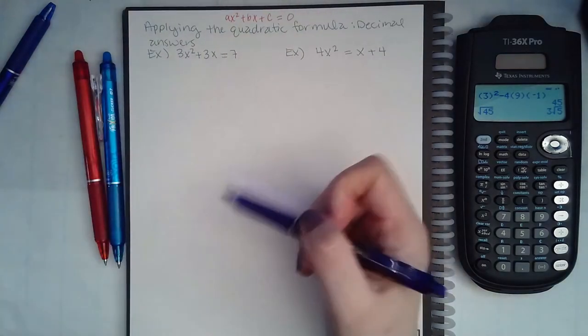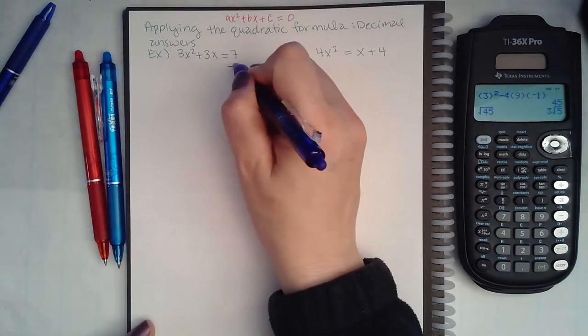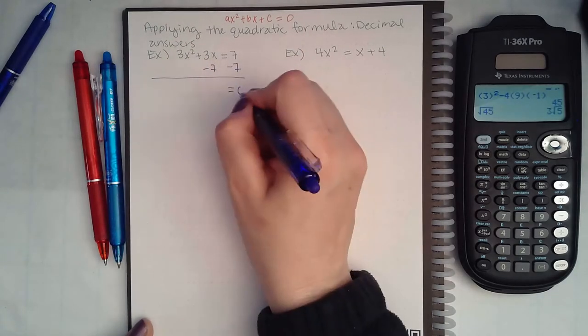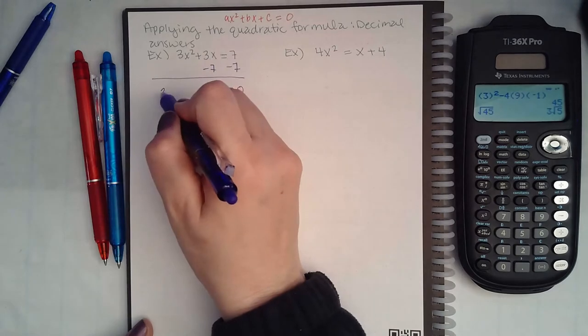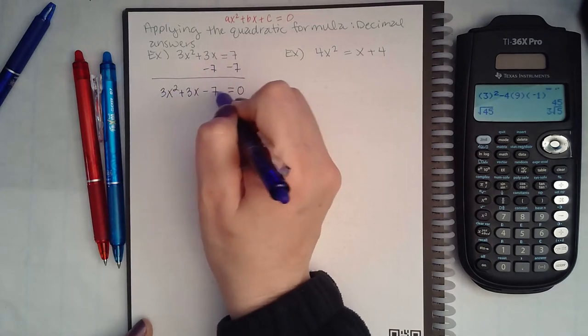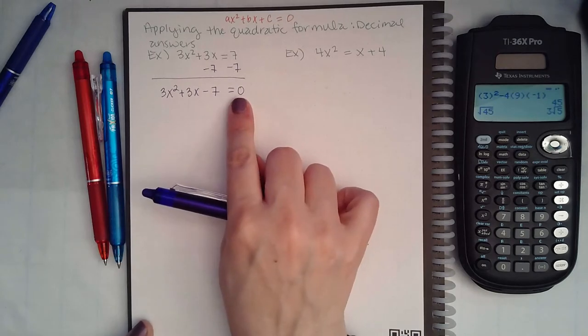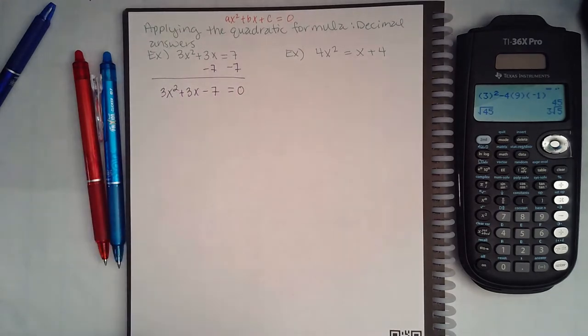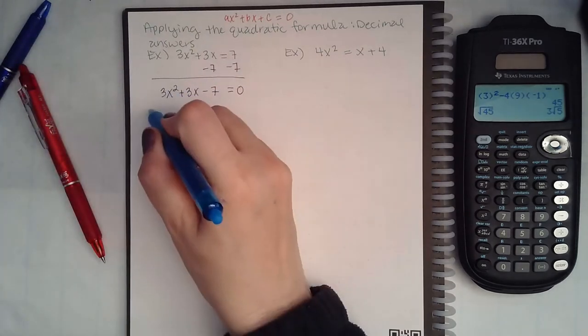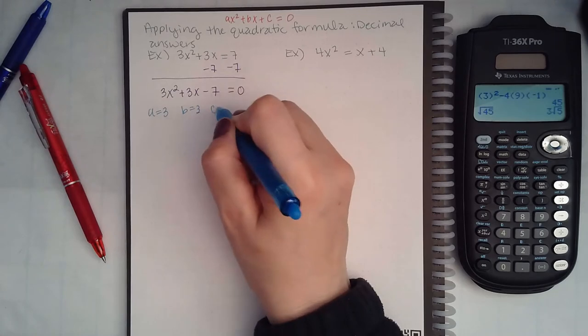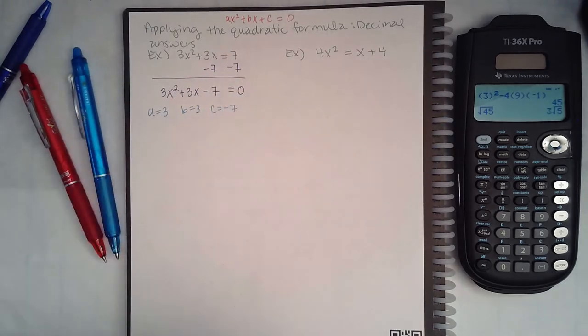This equation here is not in that form, so we will have to minus seven on both sides so that we have nothing left on the right hand side as necessary. Now we have the quadratic in the correct form to identify the a, b, c so that we can plug it into the formula.